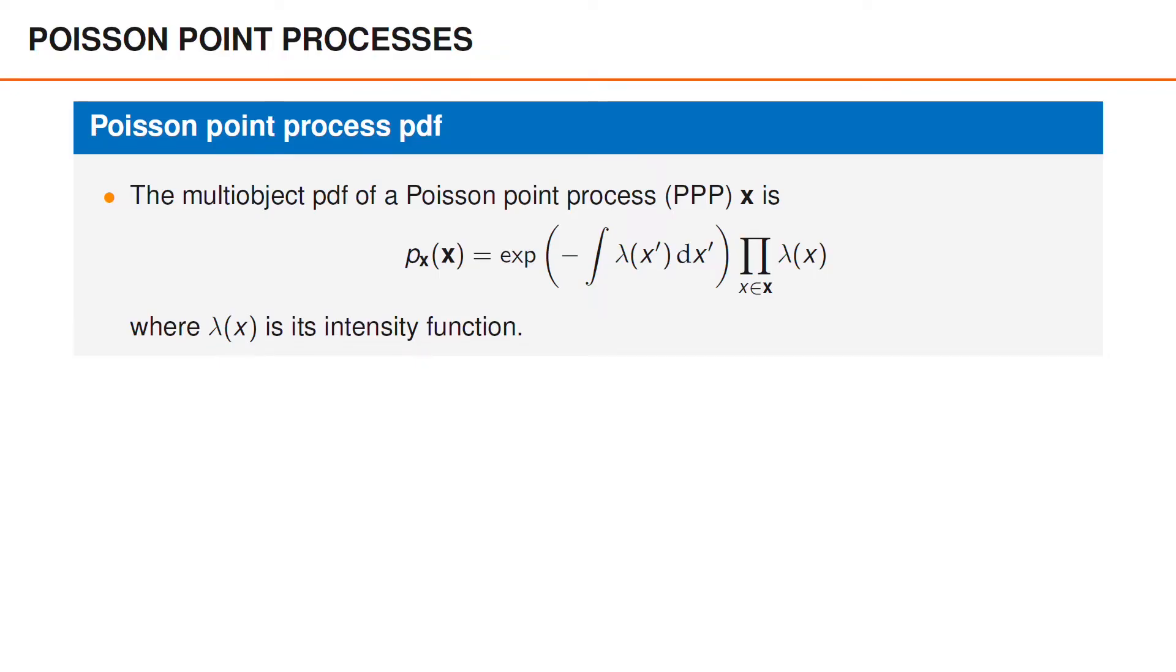If the random finite set X is a Poisson point process with intensity function lambda, its multi-object PDF evaluated for a set X is e to the power of minus the integral of the intensity function, times a product over all the elements in the set X of the intensity function lambda evaluated for the different elements. The first factor is merely a normalization and does not depend on the set X. We can use the definition of the Poisson rate, which is the integral over the intensity function, to express this multi-object PDF on a different form.